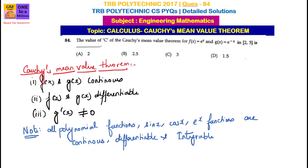We have a question about the maximum value of c of Cauchy's Mean Value Theorem, where f of x is equal to e power x and g of x is equal to e power minus x, on the interval [2, 3].